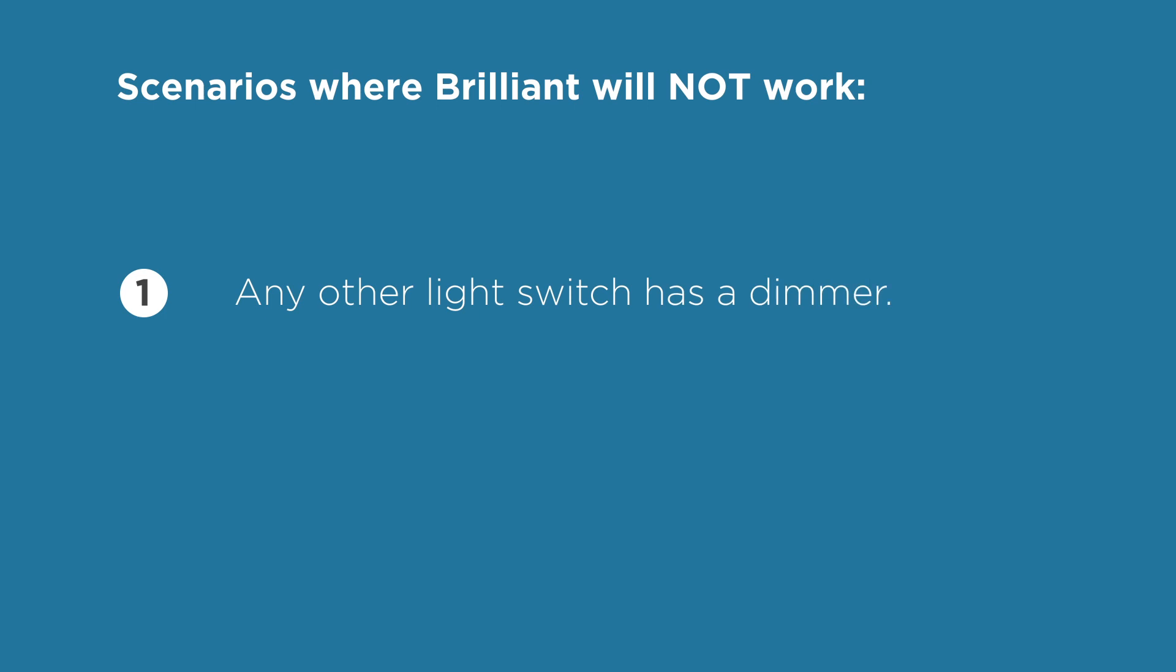Case number one is if any other light switch on the same circuit. Case number two is if you are trying to replace your four-way switch in the middle of a circuit with a Brilliant control.